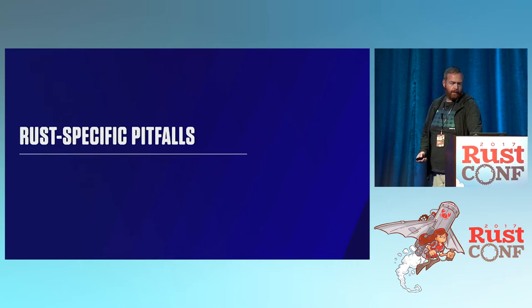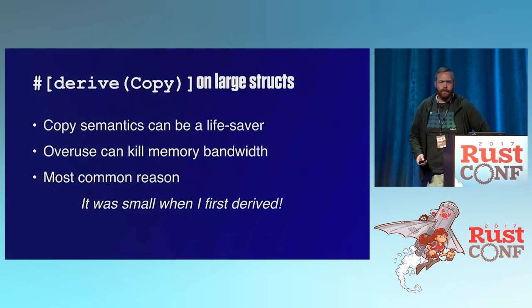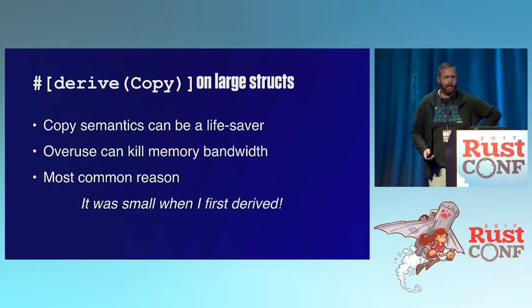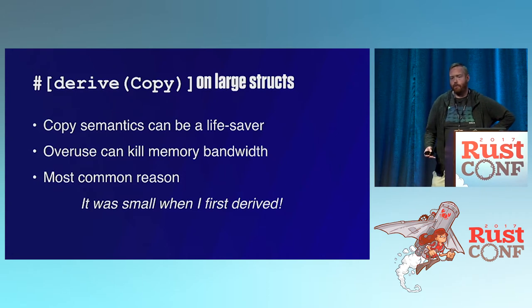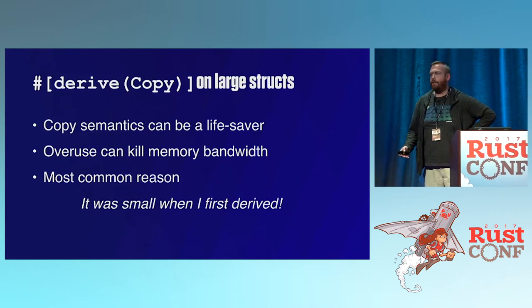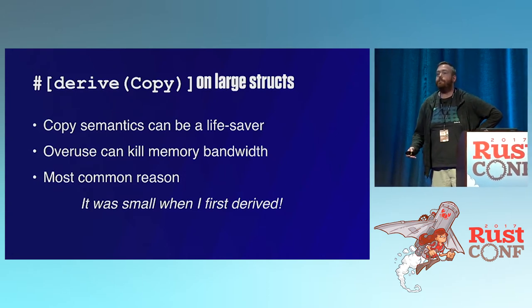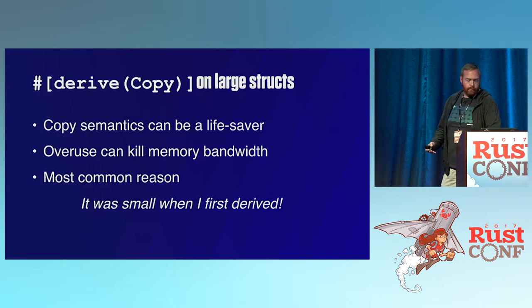I want to talk about some Rust-specific pitfalls. Here's a big one: derive Copy on large structs. Copy makes your programs much more ergonomic, but if you find yourself overusing it, you can accidentally kill your DRAM bandwidth. Clone is explicit, but Copy is implicit. The most common reason is it was small when you started — for example, a person struct might start with just an int and a string reference, but then someone decides to put the whole user's DNA in there, which is 800 megabytes. It should be a reference, or maybe not there at all.